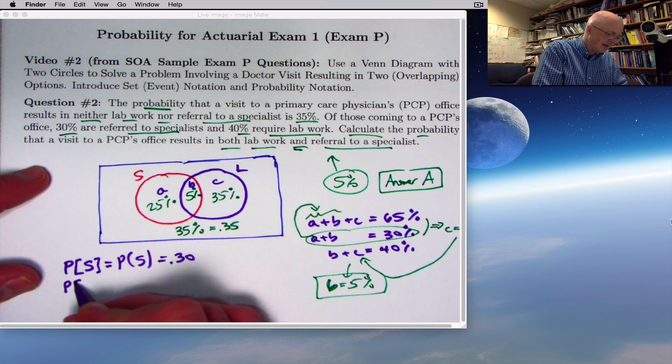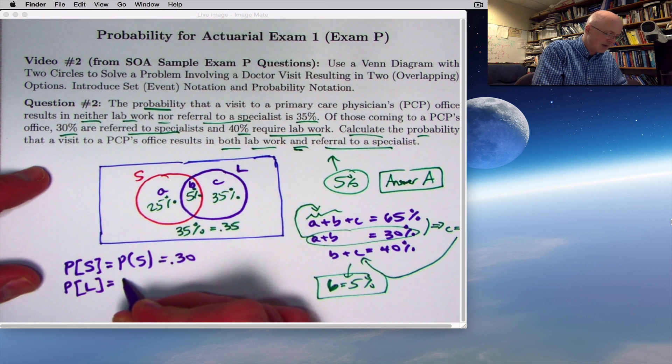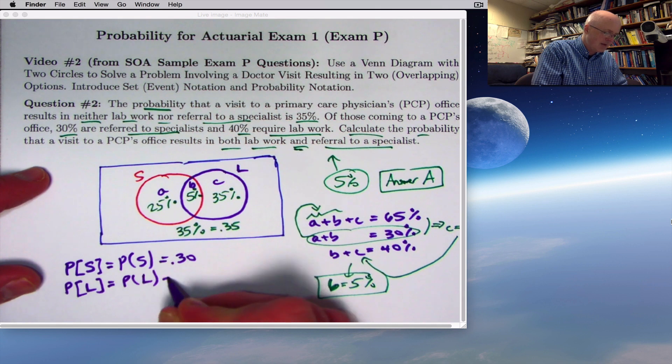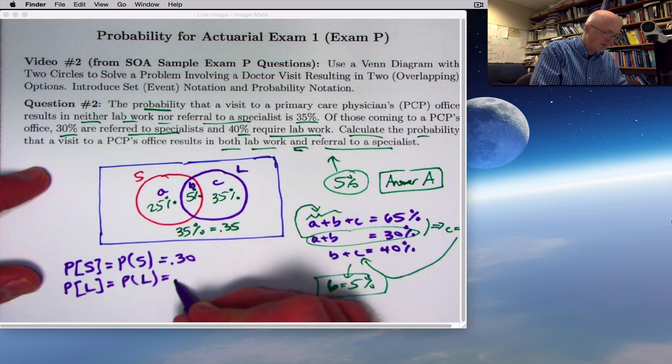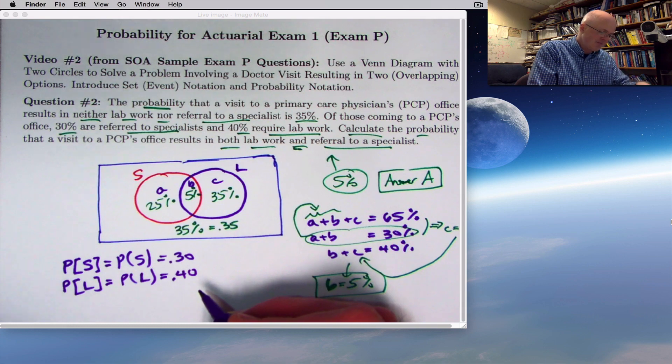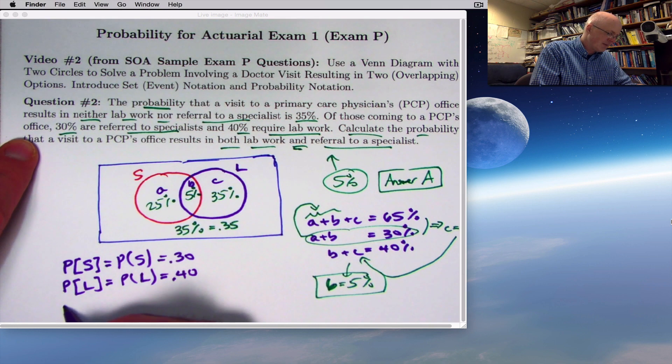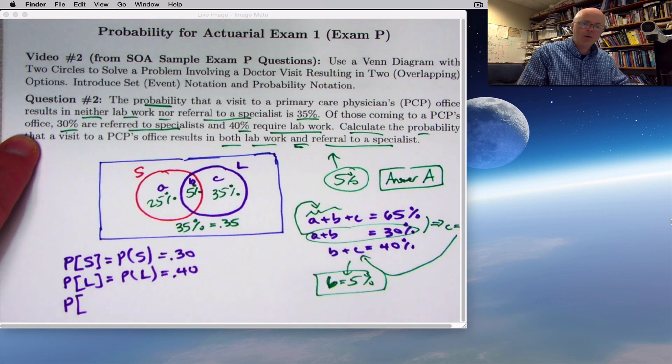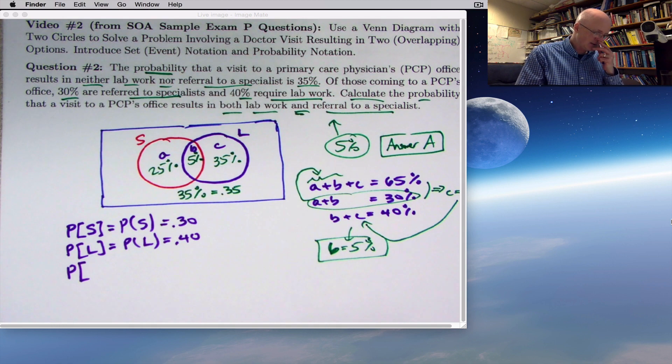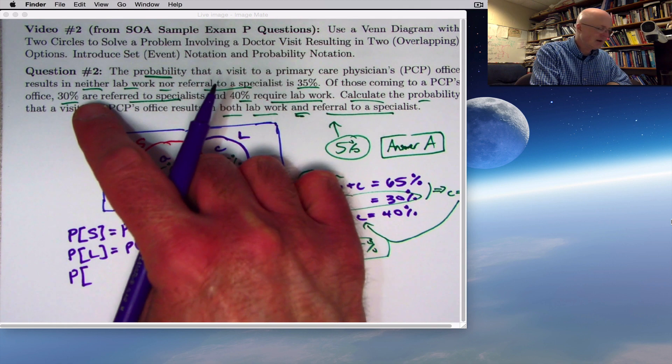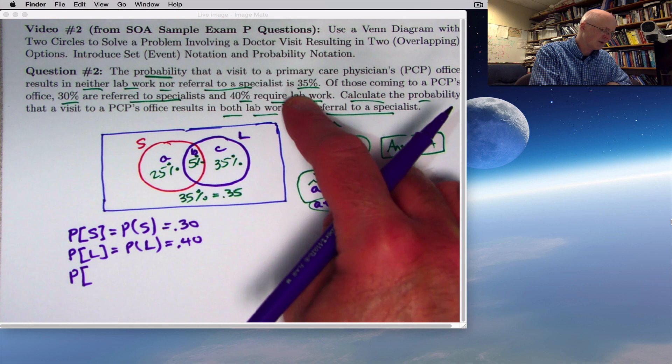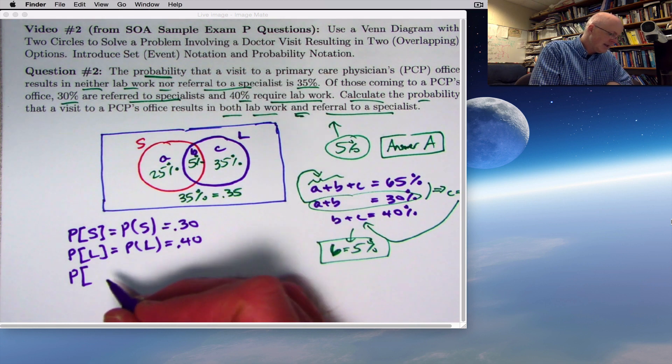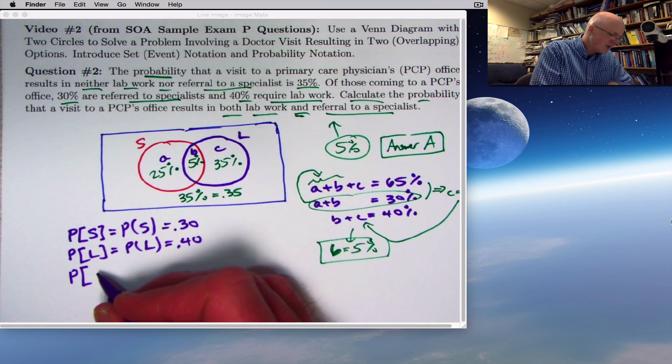You could also write P of L, either with square brackets or parentheses, to represent the 40% of people who had lab work done. I'll use square brackets from now on. As for this 35% who neither had lab work done nor referral to a specialist, it's common to use prime notation to represent when something is not happening.